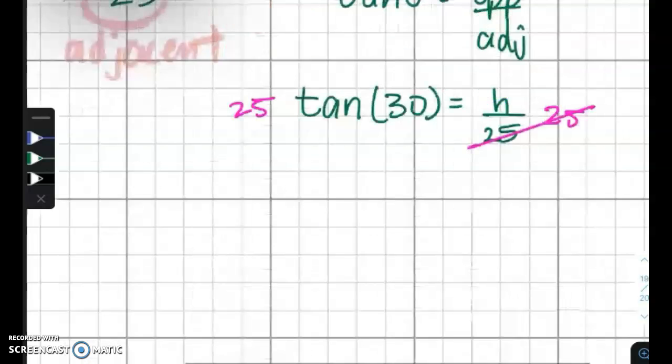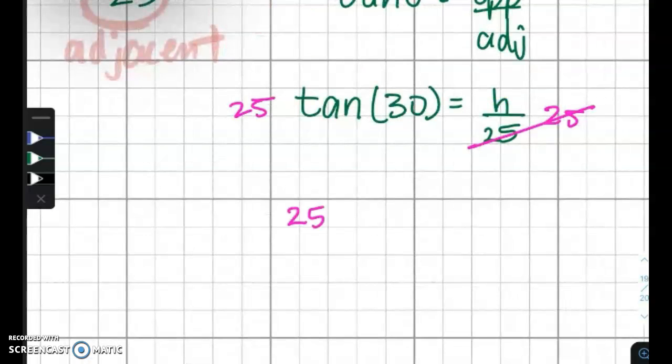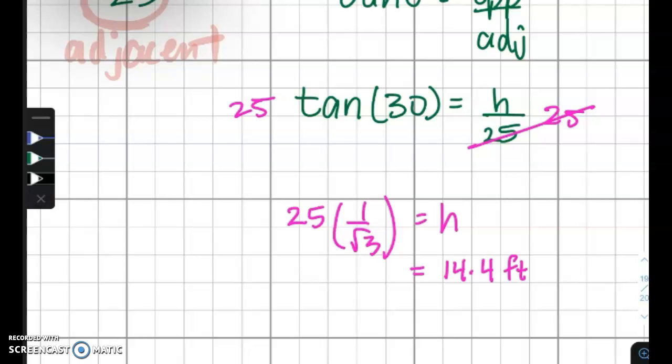So we get 25 times 1 over radical 3. Whatever that is, is your height. It happens to be 14.4, and our units here were feet. So that is the height of the flagpole.